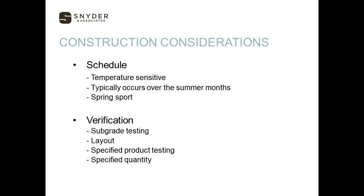Once we get into construction, there are a lot of verifications that need to happen. There's a lot of different testing — we want subgrade tested and proof rolls done. We want layout verified when it's set up, as there are specific distances needed for regulation size tennis courts. Specified product testing is required for all products. A lot of this material shows up in large barrels, and we want to make sure we're getting the correct quantity of barrels for the project.